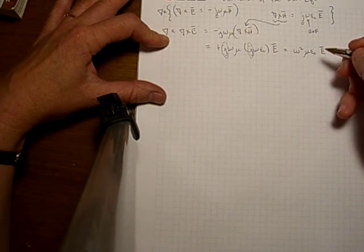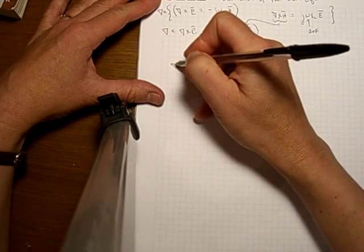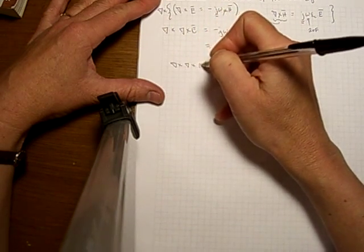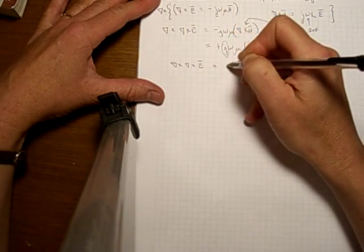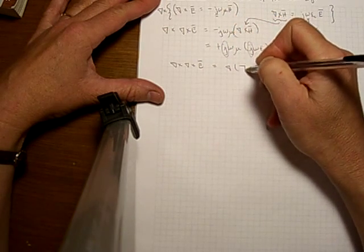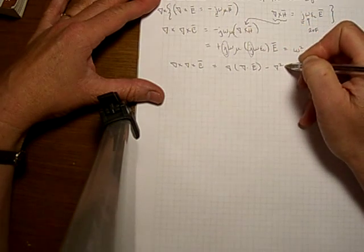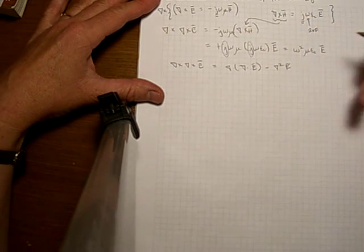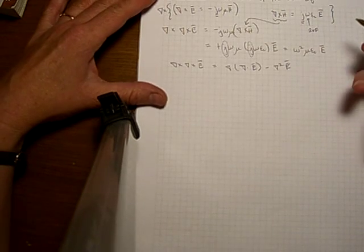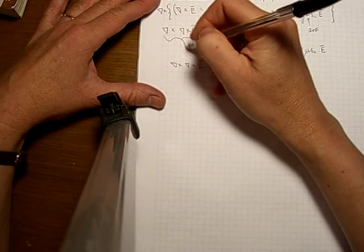There's an important vector identity that we're going to use and this is it. The curl of the curl of any vector is equal to the gradient of the divergence of that vector minus the second term here of that same vector. So here's this right there.